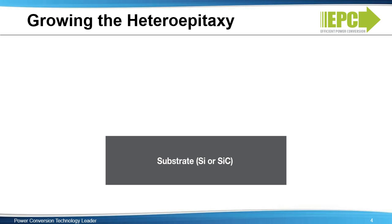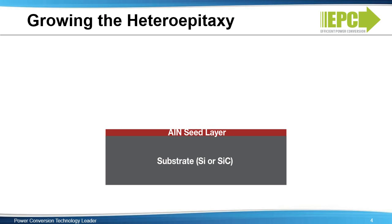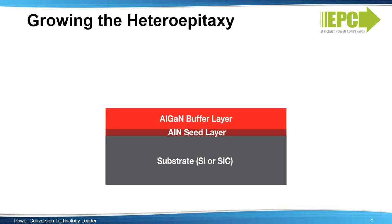The starting material of either silicon carbide or silicon is heated in a reaction chamber. A layer of aluminum nitride is then grown to create a seed layer. Next, a series of aluminum gallium nitride buffer layers create the transition to the GAN crystal.